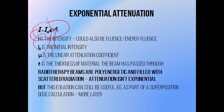This equation doesn't have to be all about intensity. It can also be cast in terms of fluence or energy fluence, where fluence is the number of photons passing through a certain volume, and energy fluence is just the fluence times the energy of the particles. These can be useful in advanced dose calculation algorithms, such as the collapse cone convolution algorithm.